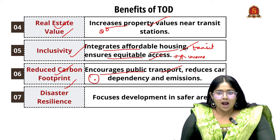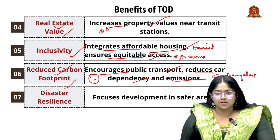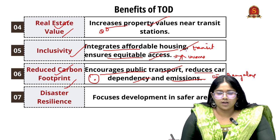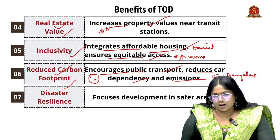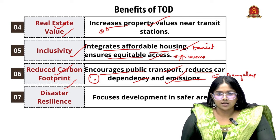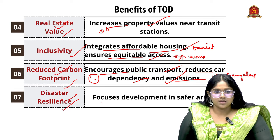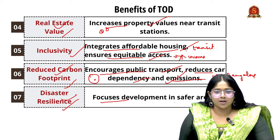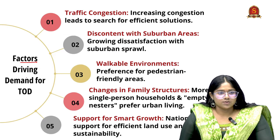Next is having a reduced carbon footprint — having one transit system encourages public transport and reduces car dependency and emissions. For a city like Bangalore, having a common transit system rather than every citizen using a car can reduce traffic congestion and increase sustainable development. Finally, disaster resilience — having transit areas helps focus development in safer areas rather than high-risk zones.